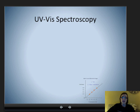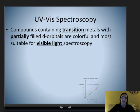With UV-Vis spectroscopy, compounds that contain transition metals with partially filled d orbitals tend to be the most colorful and the most suitable for visible light spectroscopy. For example copper, when you create a copper solution, it's a nice bright blue color that's very suitable for visible light spectroscopy. The more colorful the better. We're using spectroscopy that depends on color and visible light, so the more colorful the better.